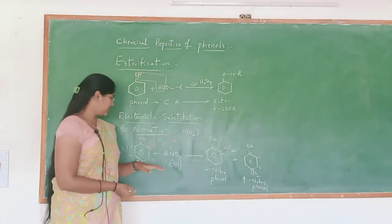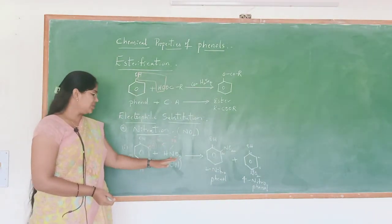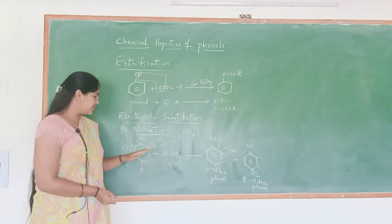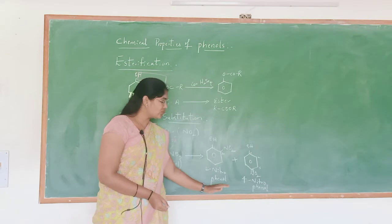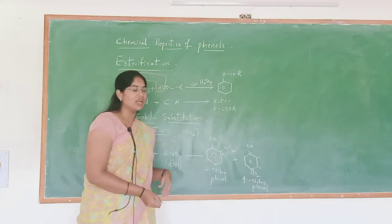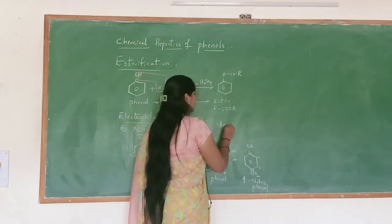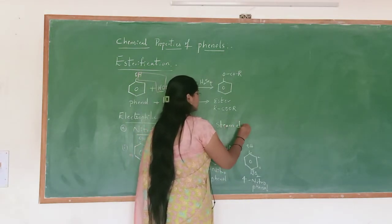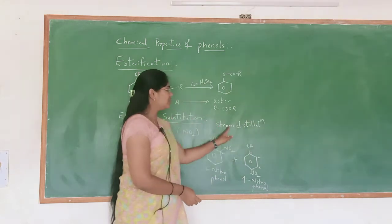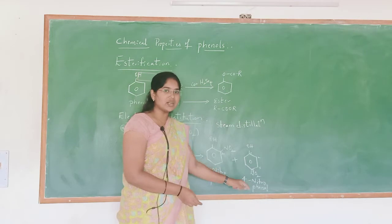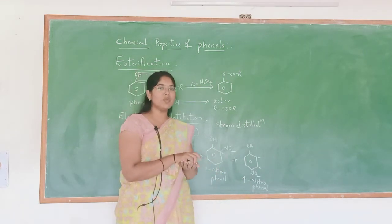So this is the nitration in the presence of dilute nitric acid. In the presence of dilute nitric acid, when phenol undergoes nitration, it leads to give a mixture of 2-nitrophenol and 4-nitrophenol. So these two can be separated by using steam distillation process.